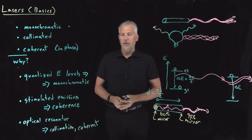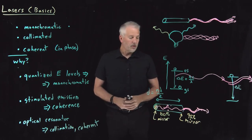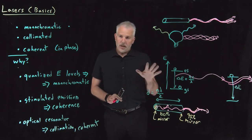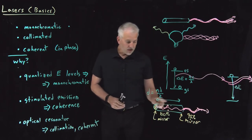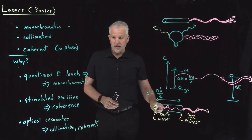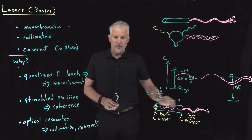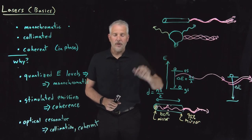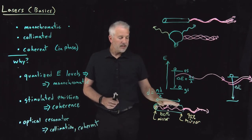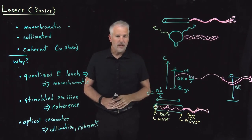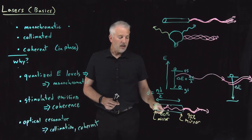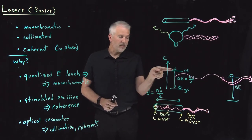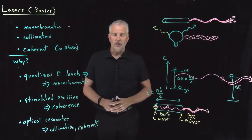That's a top-level summary. We haven't yet talked about what's actually going on inside the cavity other than that photons get generated, bounce back and forth, and sometimes escape as a monochromatic, collimated, and coherent beam of light. The next step will be to understand in more detail what the material inside the laser is and how we can use it to generate photons by transitioning from the upper state down to the lower state.